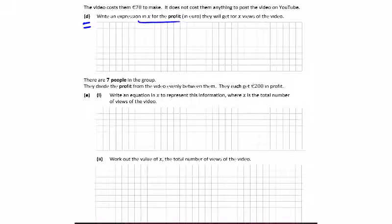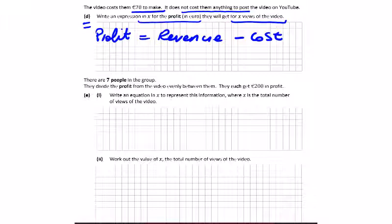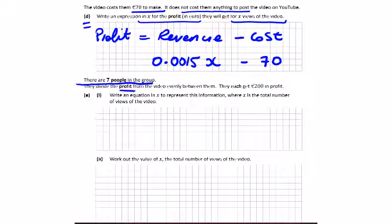Part d: write an expression in x for the profit in euro for x views. Profit is revenue minus costs. It doesn't cost anything to post, but it costs €70 to make the video. Revenue is €0.0015 per view multiplied by x views, so the profit expression is 0.0015x − 70.